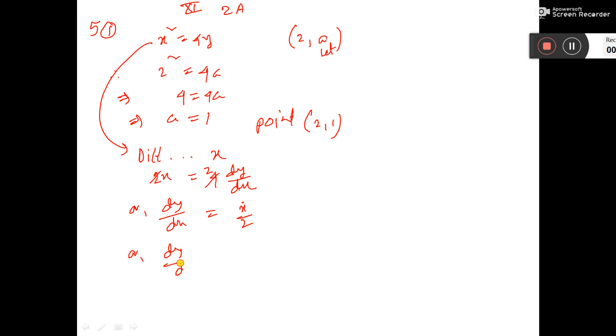Now you find DY DX at the point 2 comma 1. That is called M, is equal to, value of X is 2, so 2 by 2 is equal to 1.